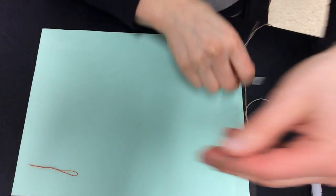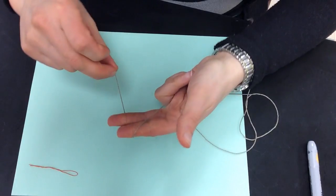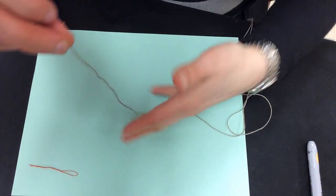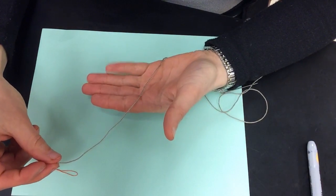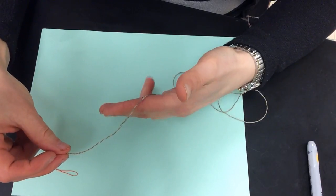So what I'm going to do is take the end that does not have the needle on it and lay it over my palm like this, and then stick two fingers out like this so that I have it laid over those two fingers.